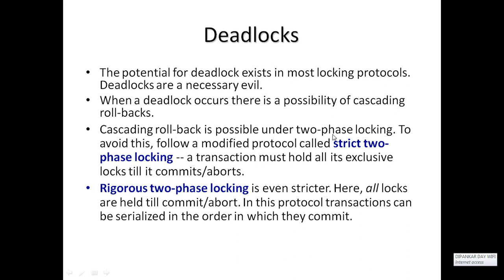To avoid cascading rollback, follow a modified protocol called strict two-phase locking protocol. A transaction must hold all its exclusive locks until it commits or aborts. In rigorous two-phase locking, all locks are held until commit or abort — until all transactions perform their final operations and then commit or abort, after which other transactions get all permissions. Transactions can be serialized in the order in which they commit.